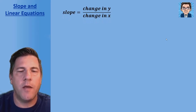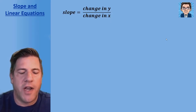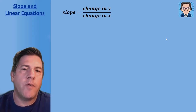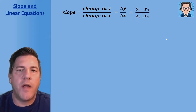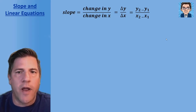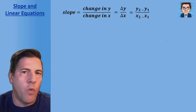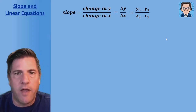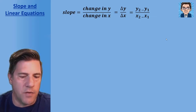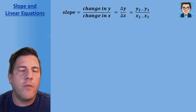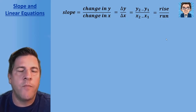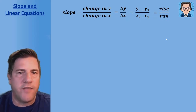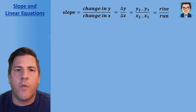Let's review slope. Slope is the change in y over the change in x. Another way we see that written is delta y over delta x — delta just stands for the difference or the change. We can also see it written as y2 minus y1 over x2 minus x1. We take the two y values and divide by the difference of the two x values. Graphically, you might see it referred to as rise over run — how much it changes up and down divided by how much it changes left and right.